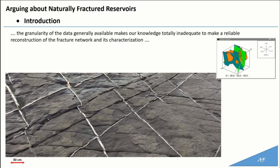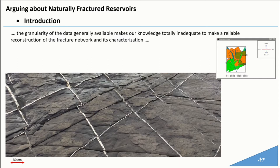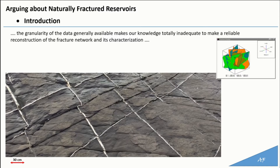Our ability to predict the reservoir production performance of a fractured reservoir before the field is brought on stream is very often fanciful and visionary. In fact, the granularity of the data generally available makes our knowledge totally inadequate to make both a reliable reconstruction of the fracture network and its characterization. This is because of the intrinsic characteristic of the fracture network, which is very discreet and discontinuous, exacerbating the shortage of available data.